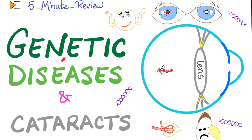Today we will shift a little and talk about genetic diseases that can cause cataract. Cataract is when the lens in your eye becomes opaque. Normally it should be clear, but in the pathology known as cataract, your lens is not clear — it has been opacified. This could happen in one eye or in both eyes.